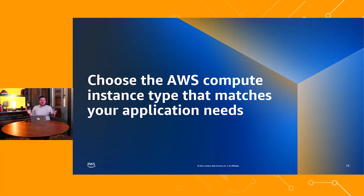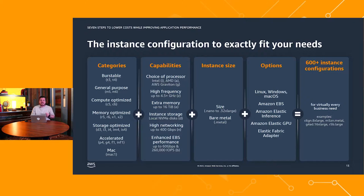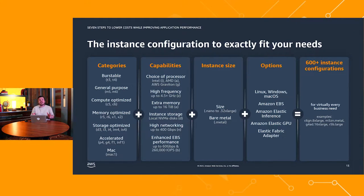You'll still have EC2 instances running to power your broad array of workloads. So now we want to talk about matching that instance type specifically to your application needs. There are over 600 different instance types available — general purpose, compute optimized, memory optimized, storage optimized for high IO or throughput, and accelerated compute with GPUs and FPGAs. Don't be intimidated by the 600 options. Answer three questions: What processes can I use? What are my workload's performance requirements and bottlenecks — is it CPU, memory, network, or disk bound? And is the workload elastic or consistent?